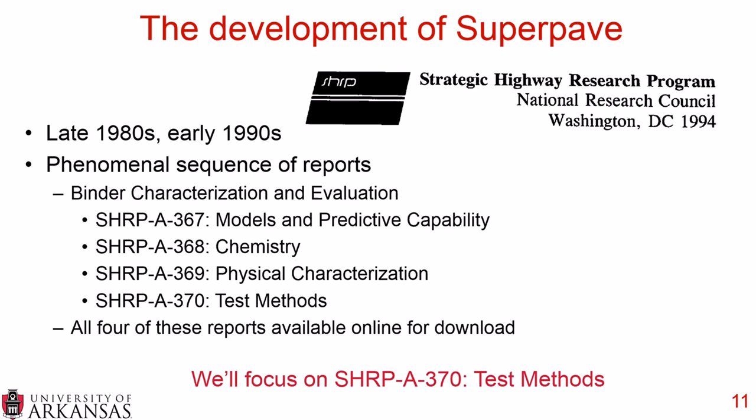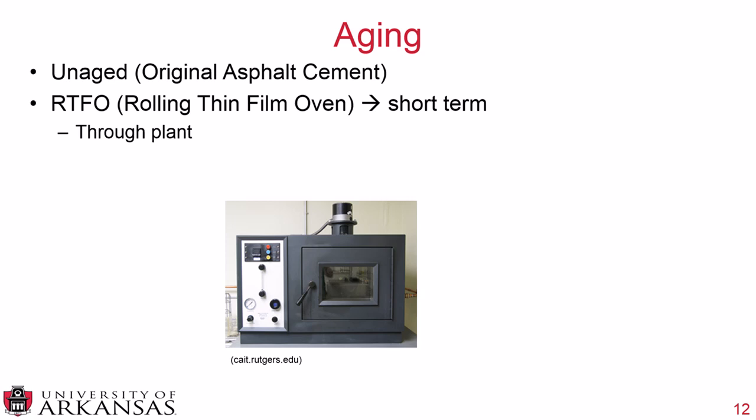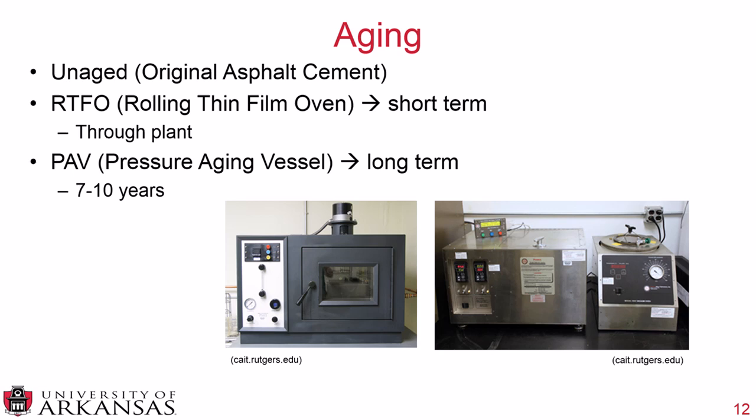Two levels of aging were developed for the SuperPave asphalt binder grading system. First is unaged — the original asphalt cement. The second is RTFO aged (rolling thin film oven), representing short-term aging through the plant: heating, mixing in the drum with aggregate, storing in the silo, and transporting to the job site. The PAV (pressure aging vessel) simulates long-term aging of about 7 to 10 years, using both time and pressure, whereas the RTFO uses only heat and time.